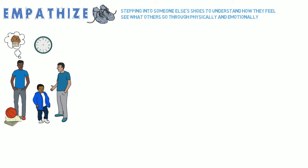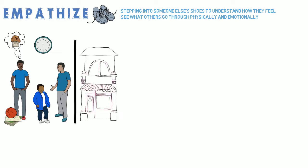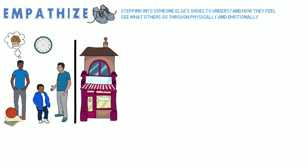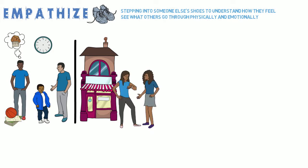When shadowing another student, the team went with her to the corner store. The store was packed with students and adults on their way to work — they could barely move between the aisles. The woman working at the counter wasn't very speedy, and the student shared that she had tried to order a breakfast sandwich before, but it takes so long she usually doesn't bother.